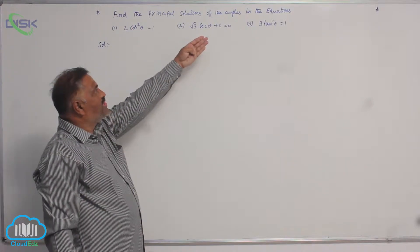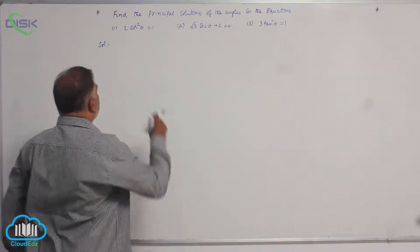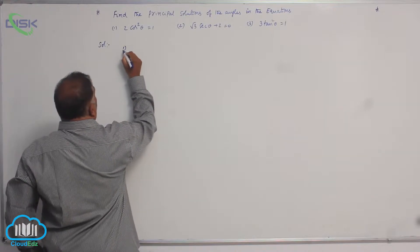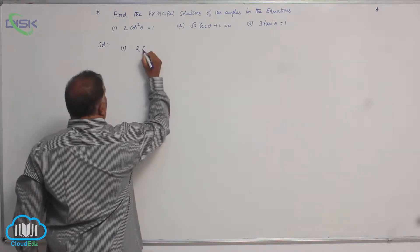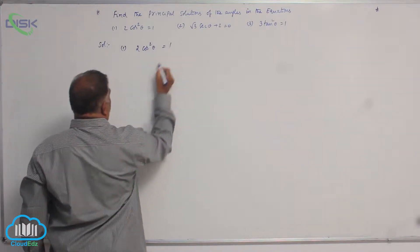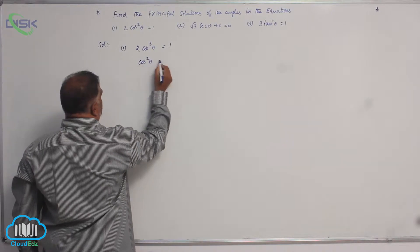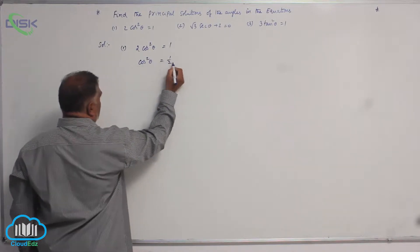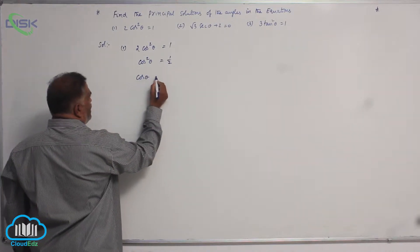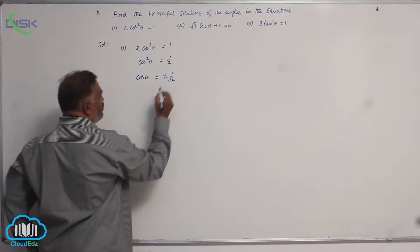Find the principal solutions of the angles in the equations. Question number 1: 2 cos squared theta is equal to 1. Dividing both sides, cos squared theta is equal to 1 by 2, so cos theta is equal to plus or minus 1 by root 2.